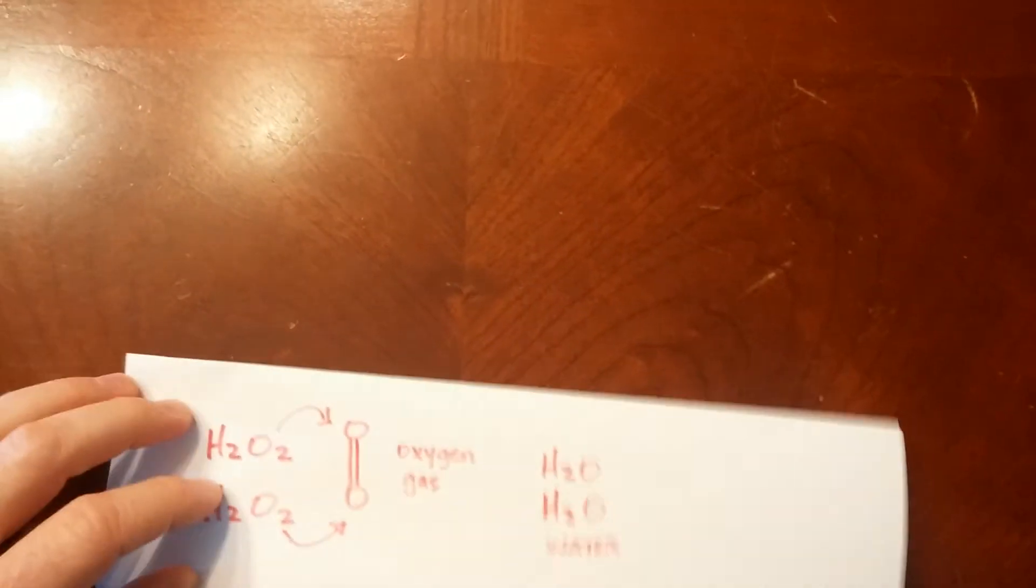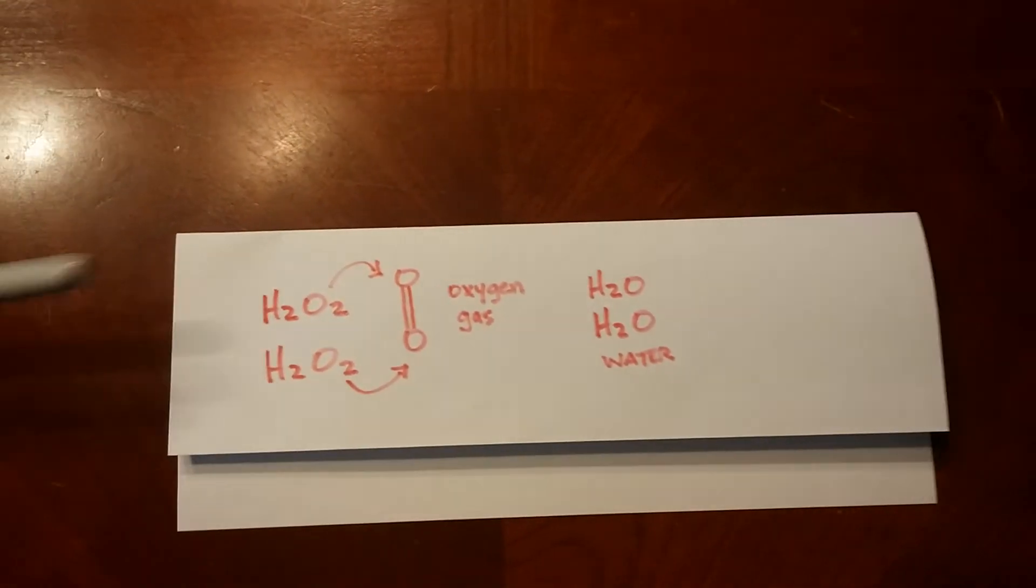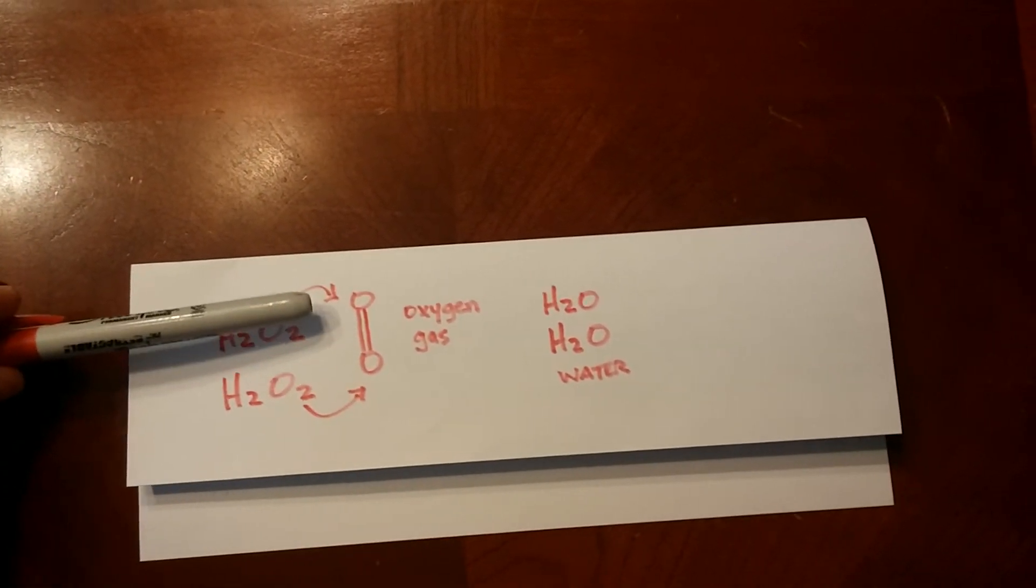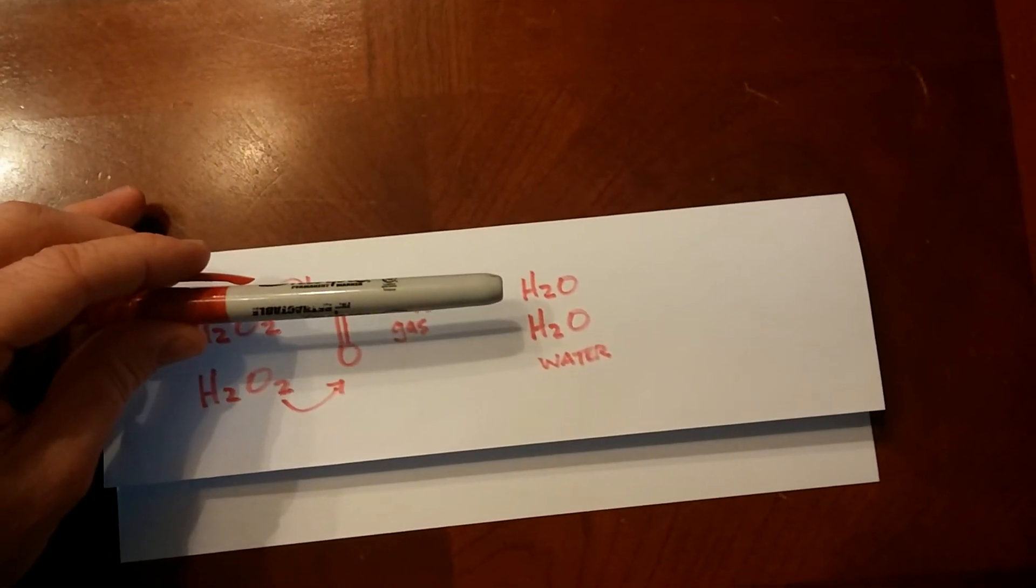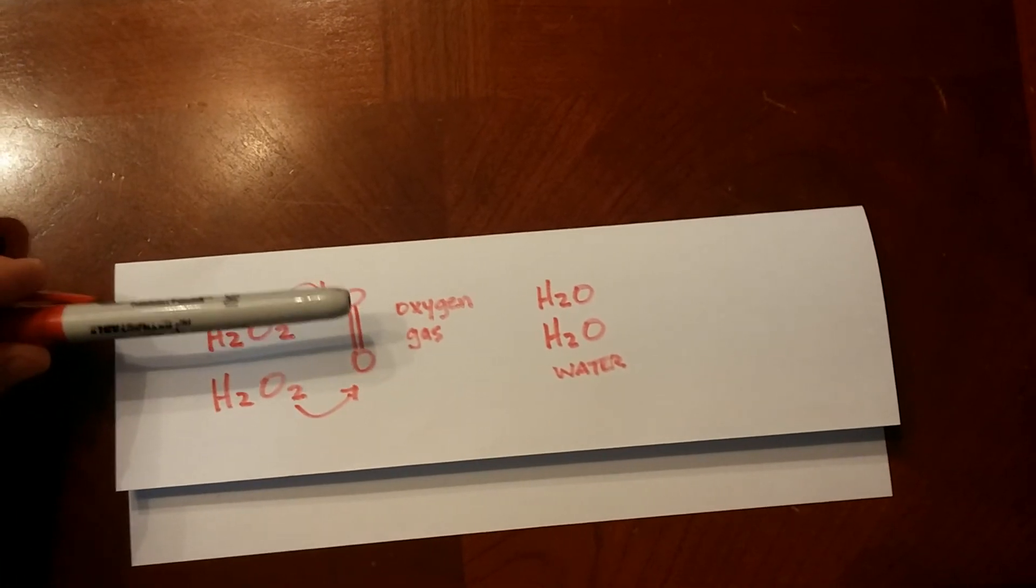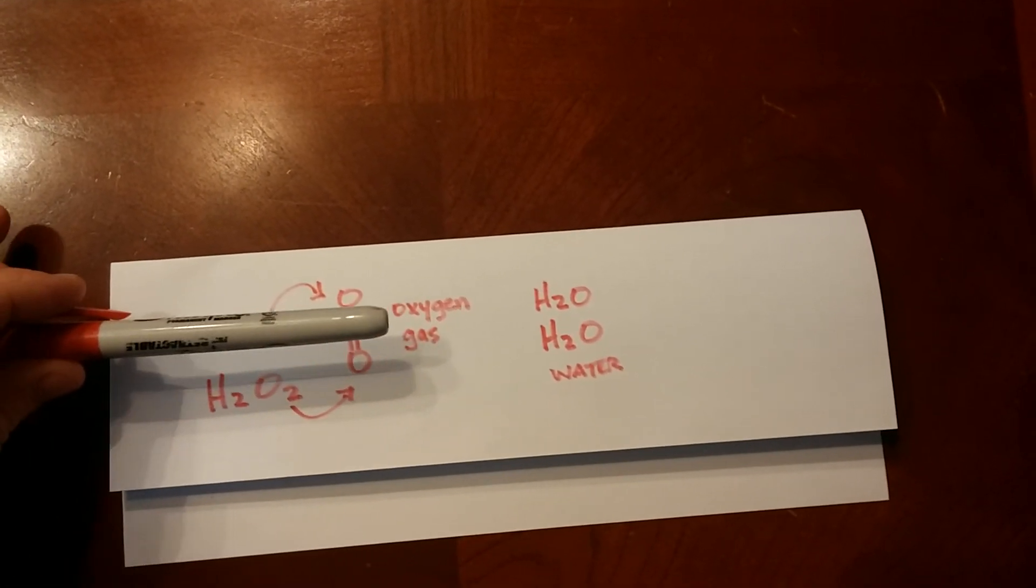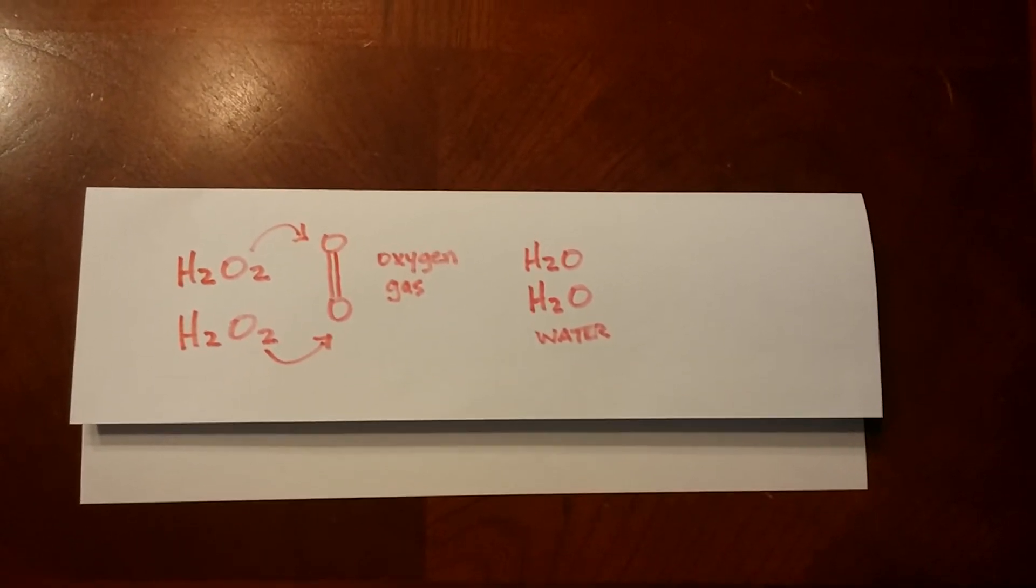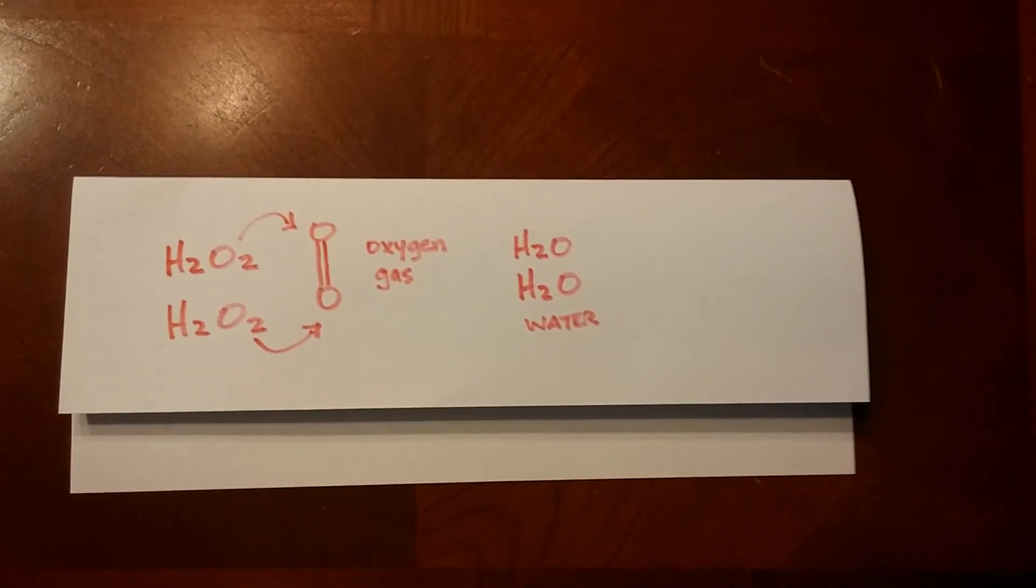Well, in the elephant toothpaste reaction, you take hydrogen peroxide and you remove an extra oxygen. This produces plain water, H2O. The extra oxygen that you take off will combine together, forming oxygen gas. And in the elephant toothpaste reaction, this will escape the container very quickly, producing the foam.